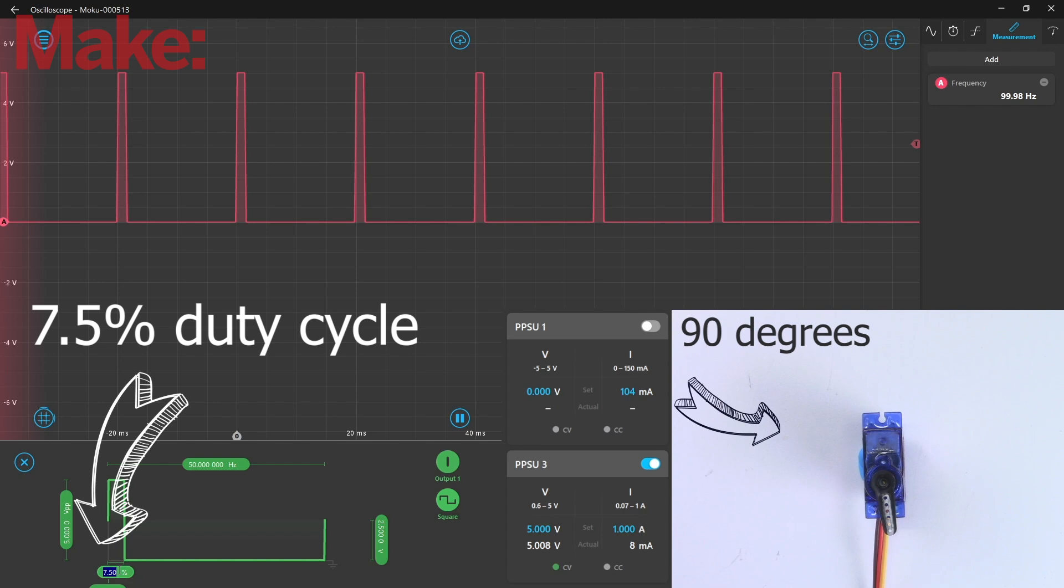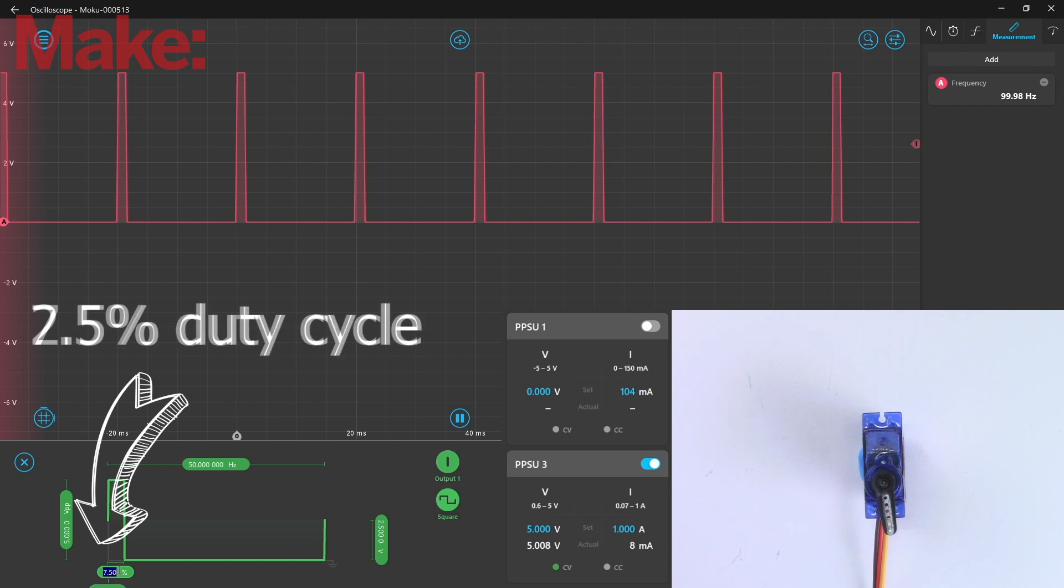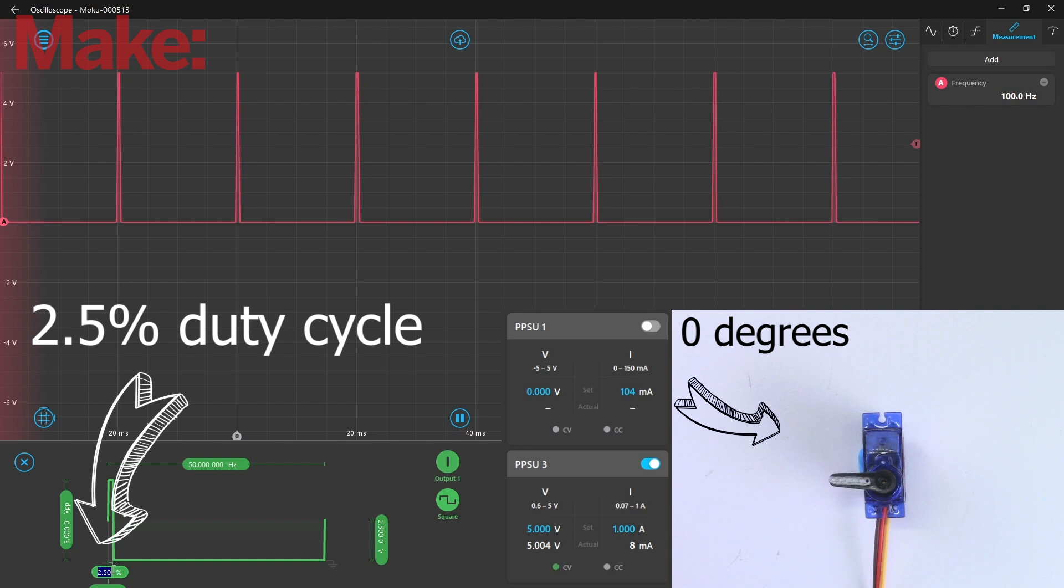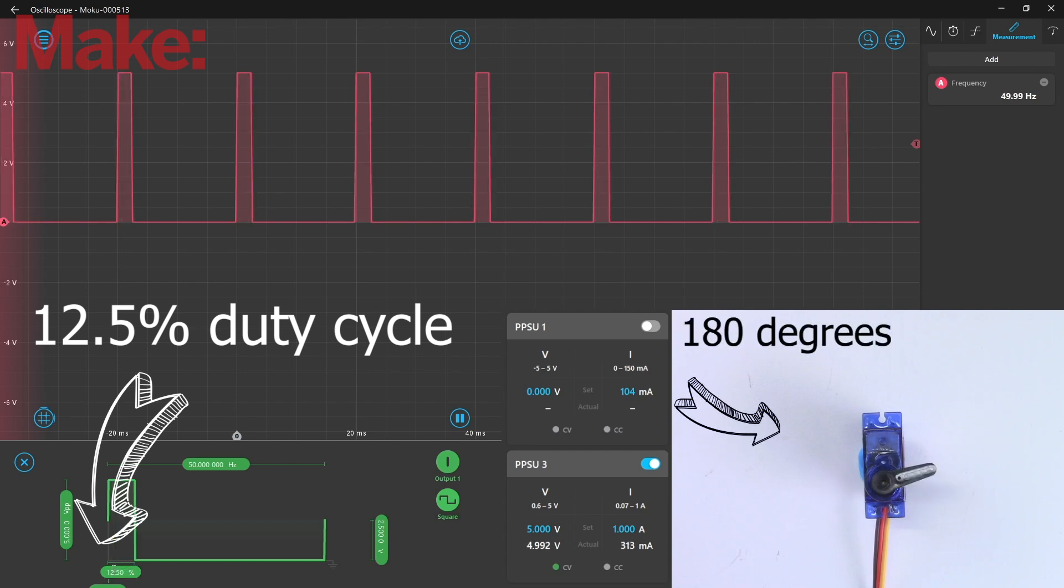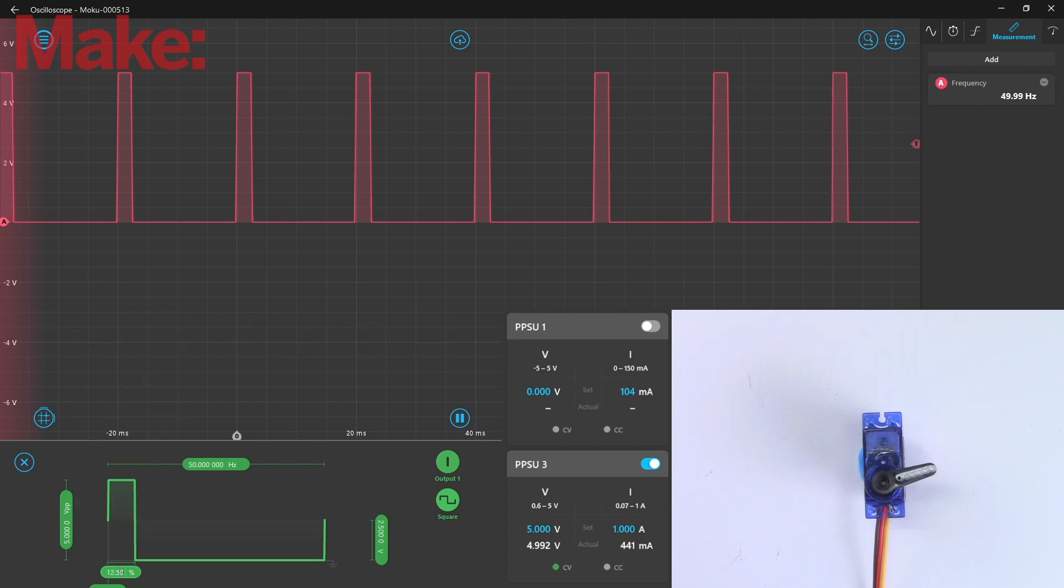Changing the pulse to a shorter duration of approximately 0.5 milliseconds, or 2.5 percent duty cycle, will move it all the way to zero degrees, and changing the pulse to a longer duration of 2.5 milliseconds, or a 12.5 percent duty cycle, will move it all the way to 180 degrees. Varying the pulse width between 0.5 and 2.5 milliseconds allows us to move the servo to almost any position in the middle.